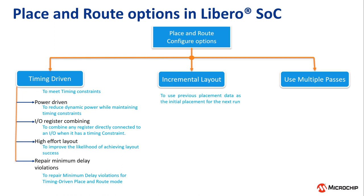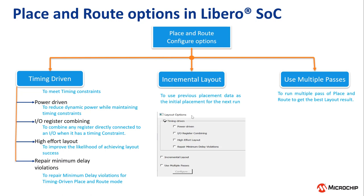Our next option is Multiple Passes. This option is used to run multiple passes of place and route to get the best layout result. This figure shows the common place and route configuration options available for SmartFusion 2 and PolarFire devices.